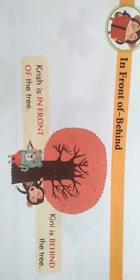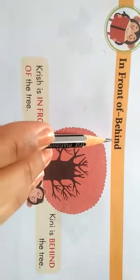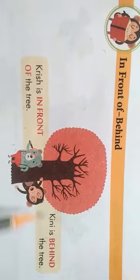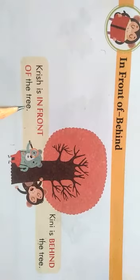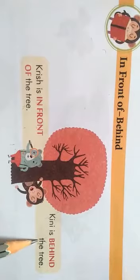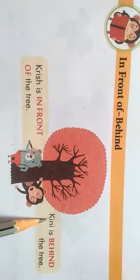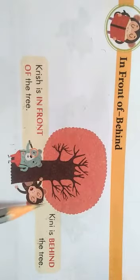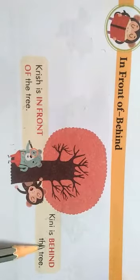Next we study in front of and behind. In front of means kisi chiz ke aage. Behind means kisi chiz ke piche. Krish is in front of the tree — Krish kahan hai? Tree ke aage, so we use in front of. Kinny is behind the tree — Kinny kahan hai? Tree ke piche, so we use behind.